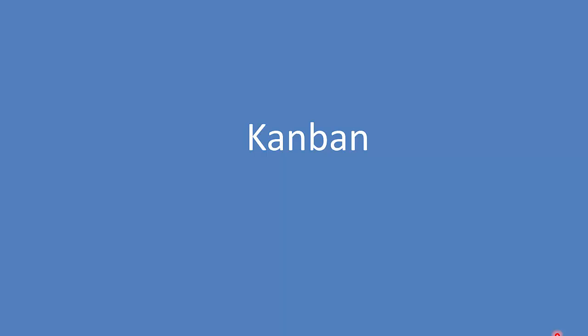To understand that, I'll show you a short example of a sandwich factory. Imagine you are assembling sandwiches on the basis of cut bread, cheese, and meat. You have two types of sandwiches: one with cheese and one with meat. The production capacities are: we can cut bread for 20 sandwiches per hour, but we can assemble only six.